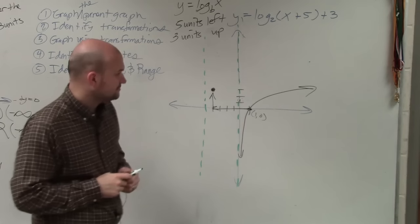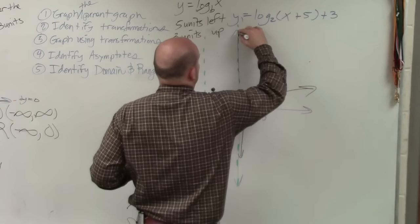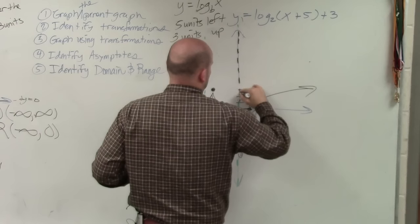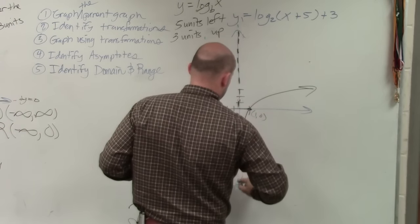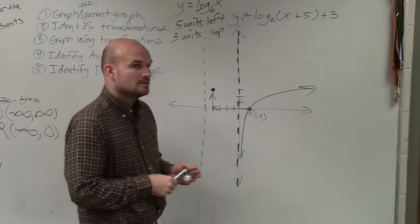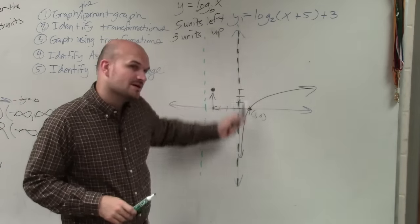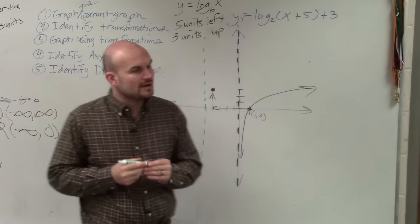Wait, wait, wait. Oh, so the original one is along the 0. So it's always going to be along the 0? On the y-axis, yes. The asymptote is always at the y-axis. And on that one, the other graph is on the x-axis? Correct. Yep, correct.